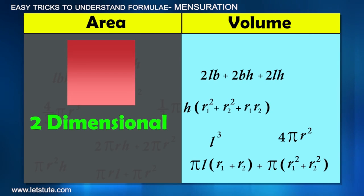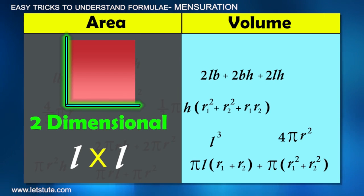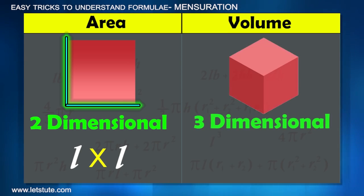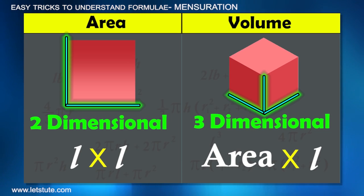Area is a two-dimensional thing as a length is multiplied with length, whereas volume is three-dimensional because it occupies space in three directions as an area is multiplied with length.